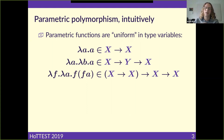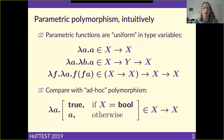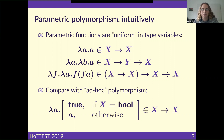The opposite adjective is "ad hoc." An ad hoc polymorphic function does something different depending on where you're applying it. For example, a function that is usually the identity function, but if you apply it to a Boolean it just returns true — that's somehow not uniform.